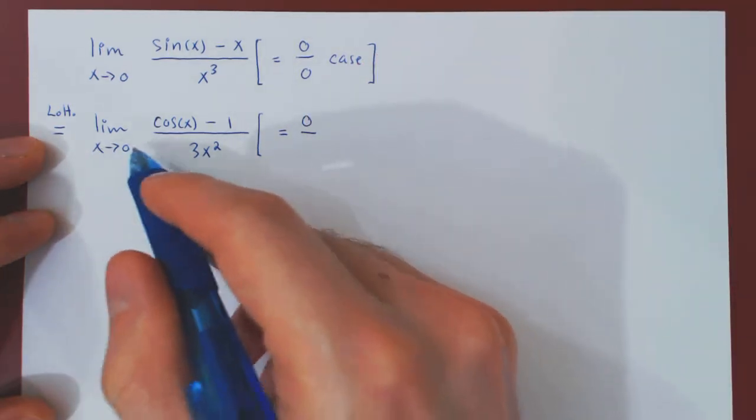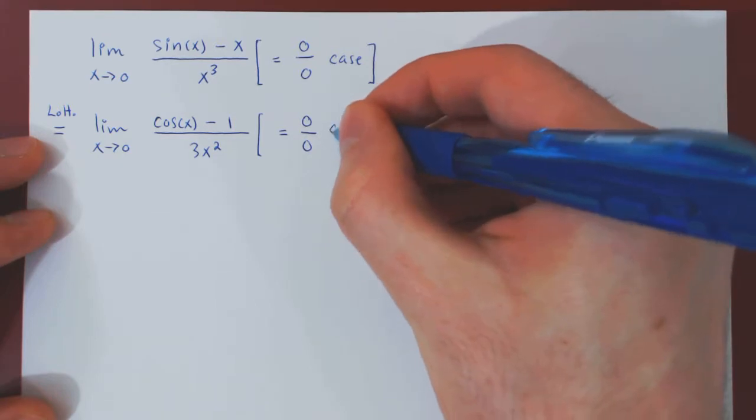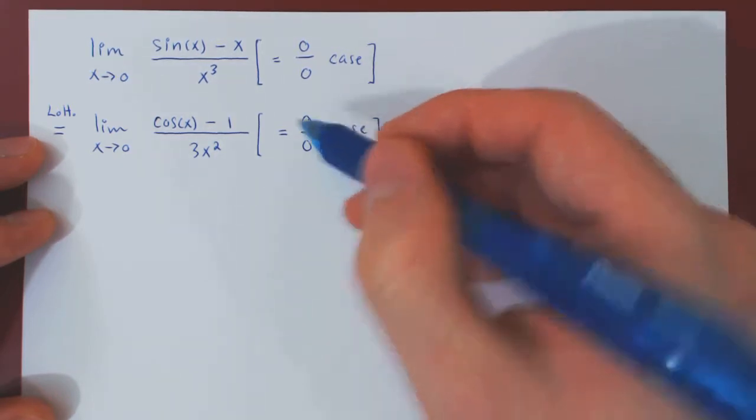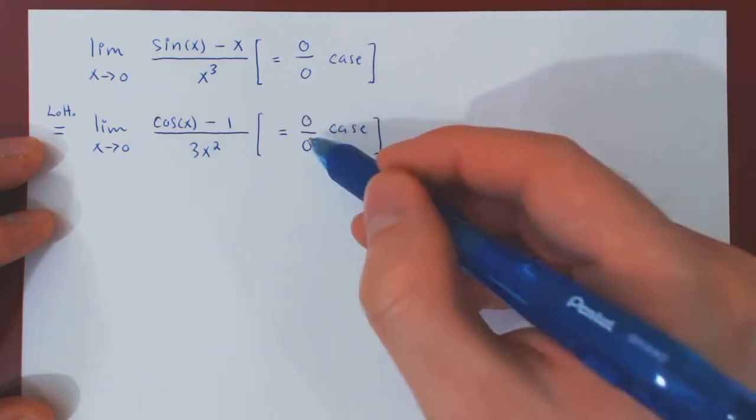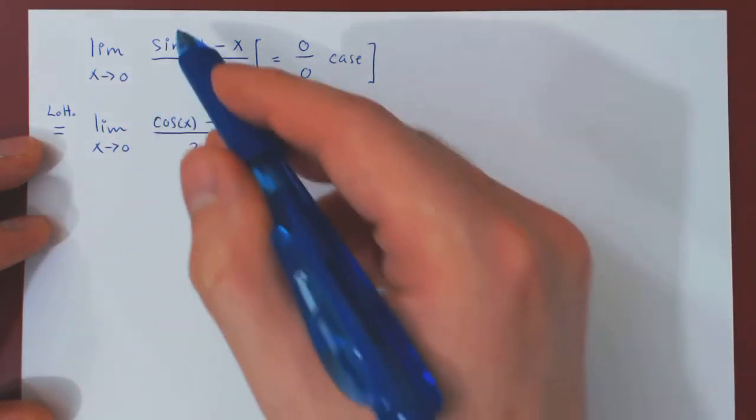Over, as x goes to 0, so does 3x squared. So we have once again an indeterminate case. The ratio of two functions, both shrinking to 0. So we still don't know what this limit is equal to.